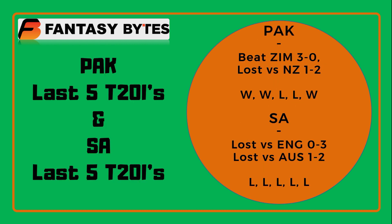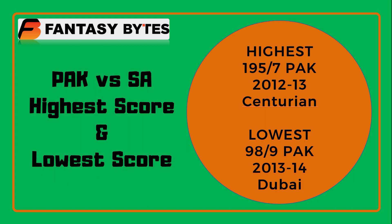In the last 5 ODIs, Pakistan has 3 wins and 2 losses — they beat Zimbabwe at home 3-0, but then lost the New Zealand series 1-2. South Africa's recent record is very bad; they have lost all 5 of their last T20 games — England beat them 3-0 at home, then Australia beat them 2-1 at home, and now they are 1-0 down in this series.